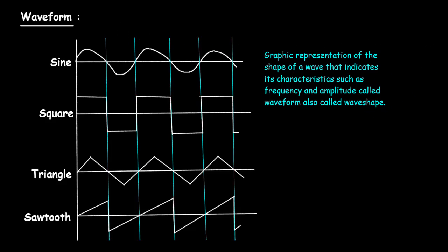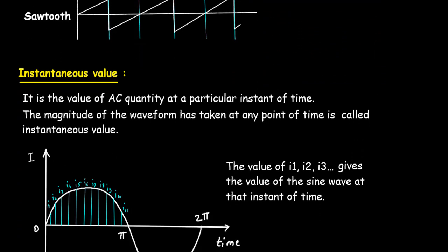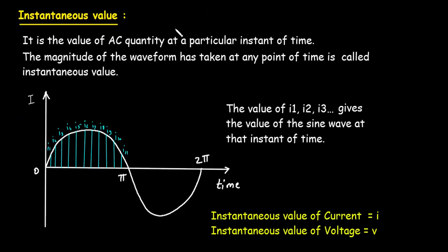So this is called a waveform. Then next is instantaneous value. Now what is instantaneous value? It is the value of an AC quantity at a particular instant of time. Here we can see I1 is the value at a particular instant of time. On the horizontal axis this is time, and on the vertical axis this is current. So I1, I2, I3 and so on are the instantaneous values.